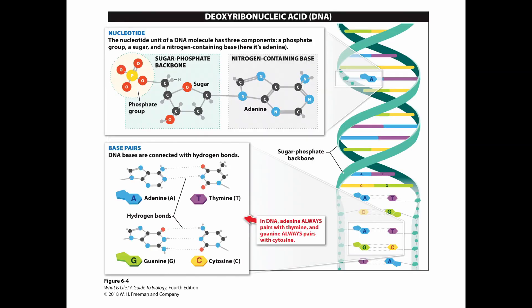Let's look at DNA's structure and breakdown, what the nucleotide is, and talk about those four base pairs. Our basic nucleotide consists of three parts: the sugar, the phosphate, and the nitrogen-containing base. There are four possible bases: Adenine shown with an A, Thymine shown with a T, Guanine shown with a G, and Cytosine shown with a C.